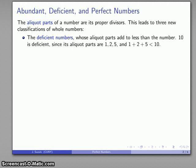For example, 10 is a deficient number. The aliquot parts, the proper divisors 1, 2, and 5, and if I put the proper divisors together, 1 plus 2 plus 5, what I get is less than 10.